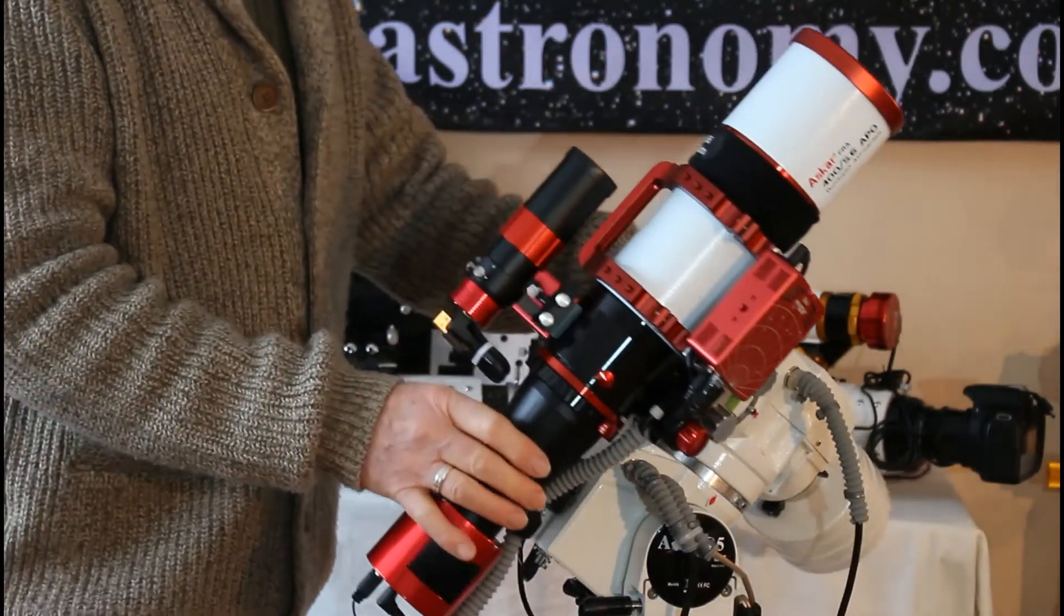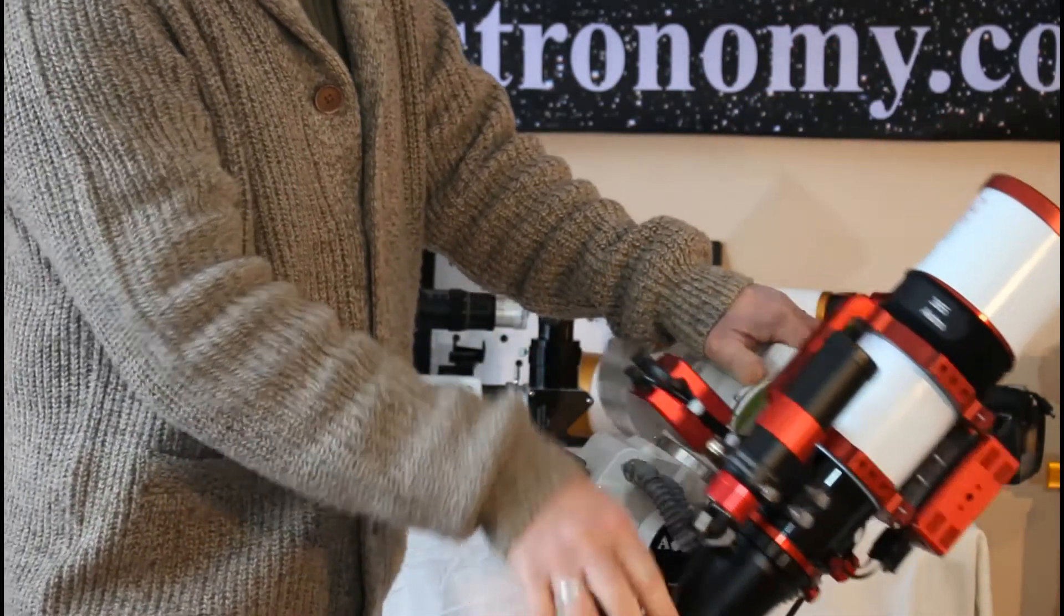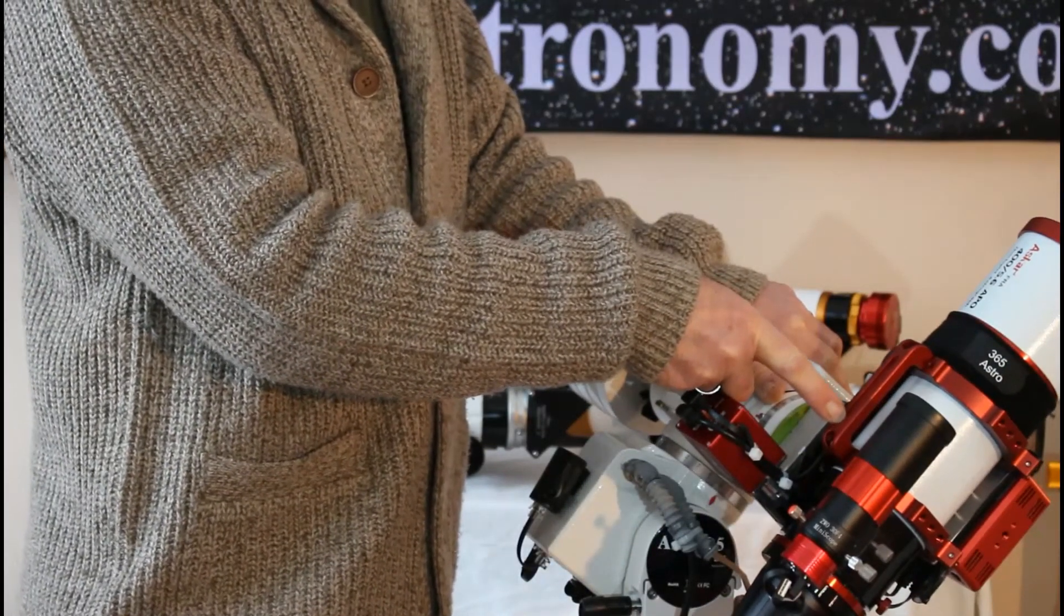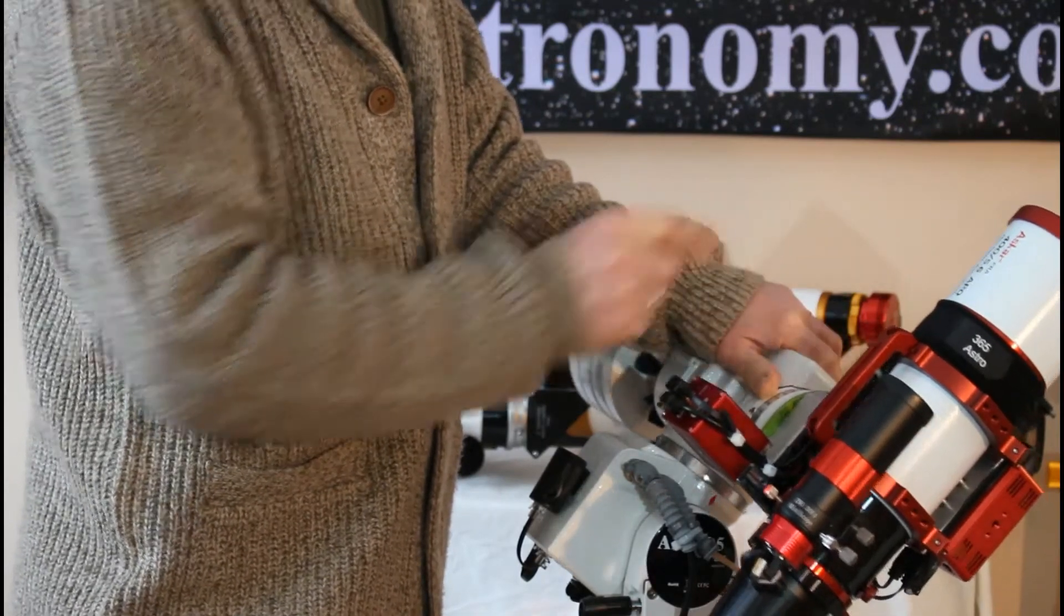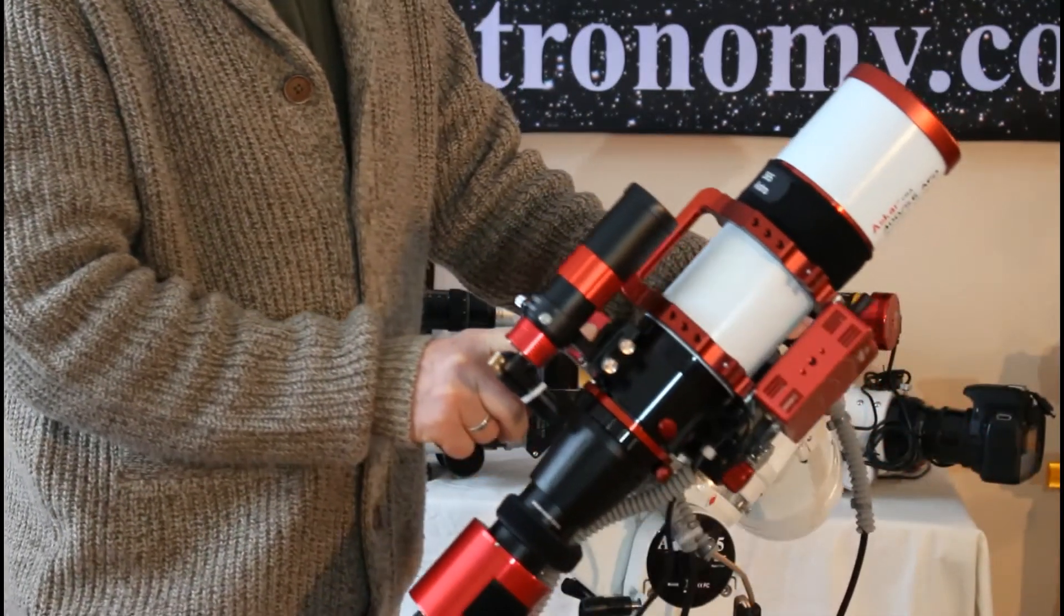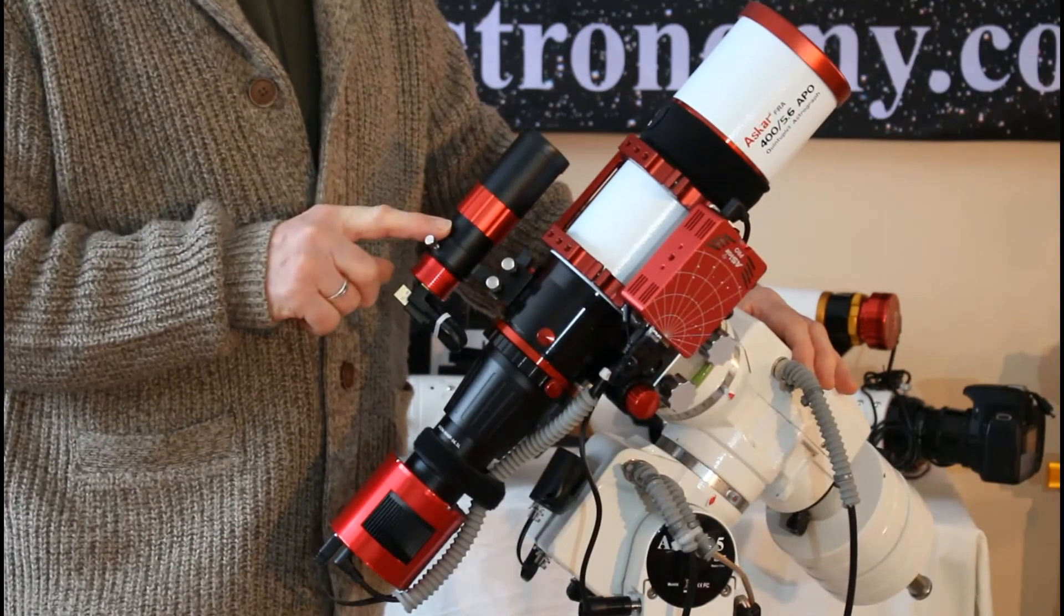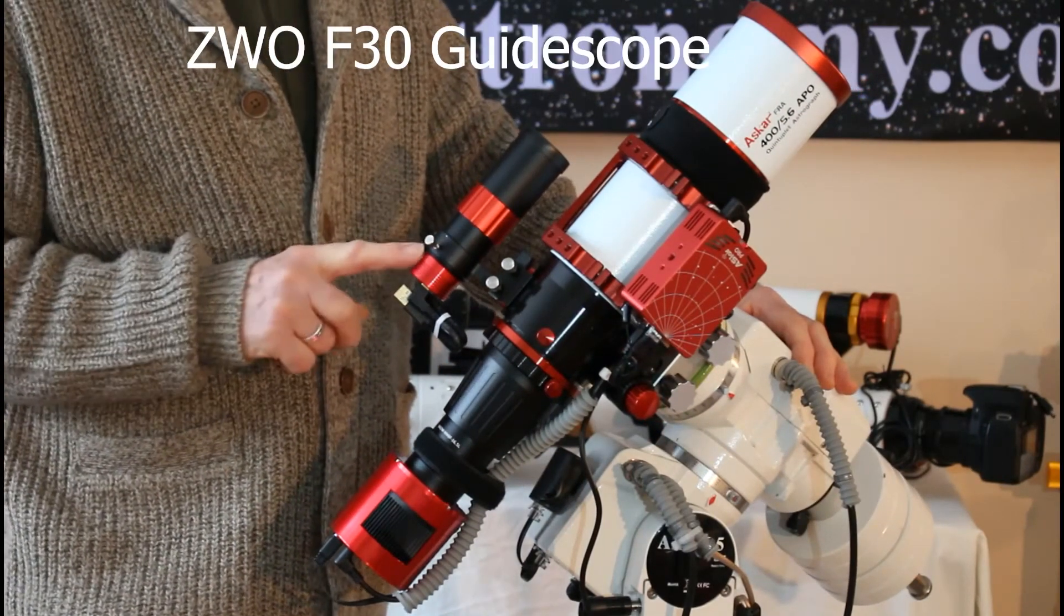On the far side of the telescope there's a carry handle, just here, which is slotted to accept any further accessories you may want to add. A finder shoe is fitted so that you can fit either a finder or, as in this case, we fitted a guide scope and guide camera. These have yet to be wired up on this particular one.